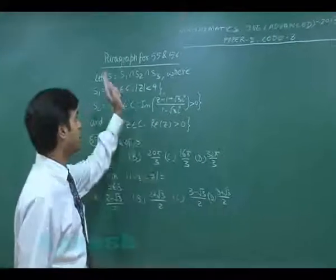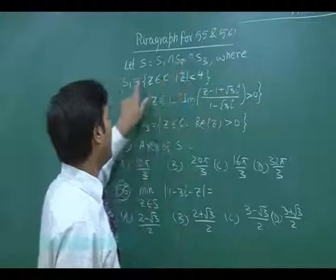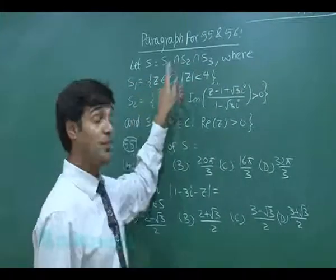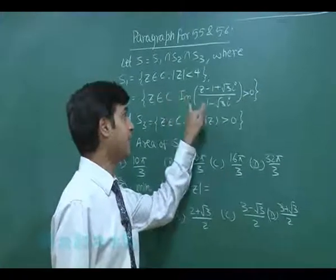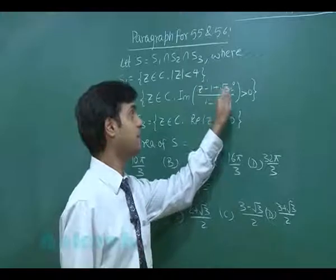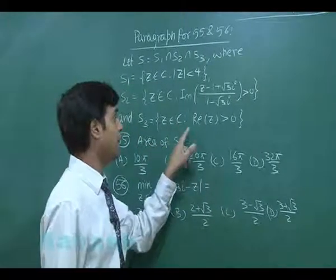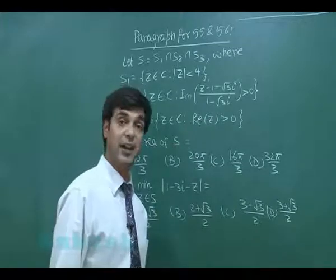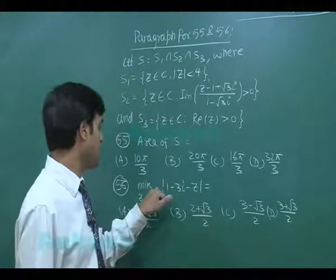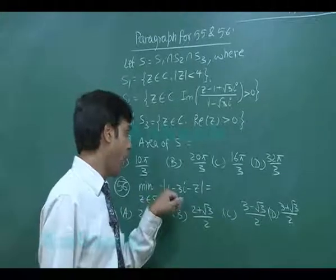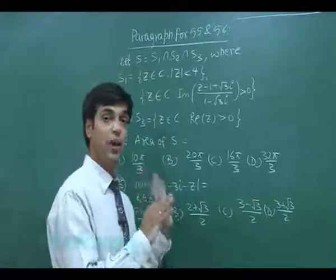Another paragraph for questions 55 and 56. Let S = S1 ∩ S2 ∩ S3, where S1 = {z ∈ ℂ : |z| < 4}, S2 = {z ∈ ℂ : Im((z − 1 + √3·i)/(1 − √3·i)) > 0}, and S3 = {z ∈ ℂ : Re(z) > 0}. Two questions are based on this: first, the area of S; second, the minimum of |1 − 3i − z| for z ∈ S. Let's construct S1, S2, S3 first.